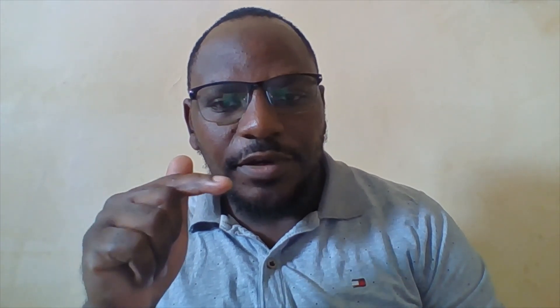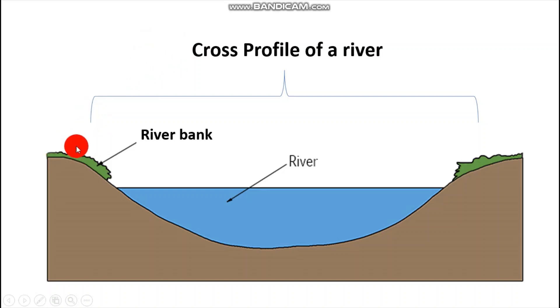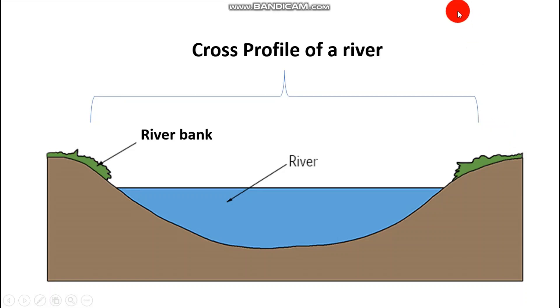Then we have the cross profile of a river — the cross section of the river from one river bank to the other river bank. That gives us the cross profile of the river.